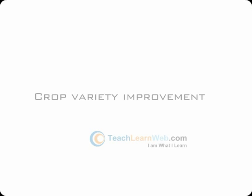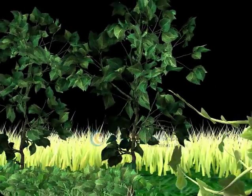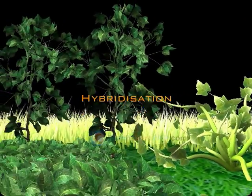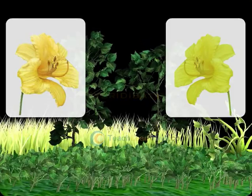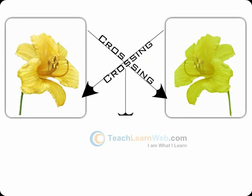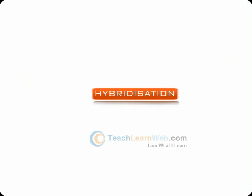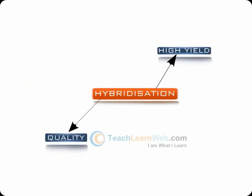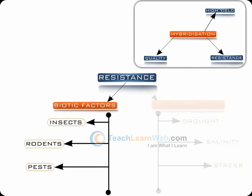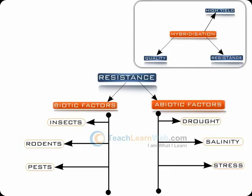Crop variety improvement. New varieties of crops are produced by hybridization. Hybridization is the crossing between genetically dissimilar plants. This activity helps in the improvement of yield, quality, resistance to biotic and abiotic factors and finally adaptability.